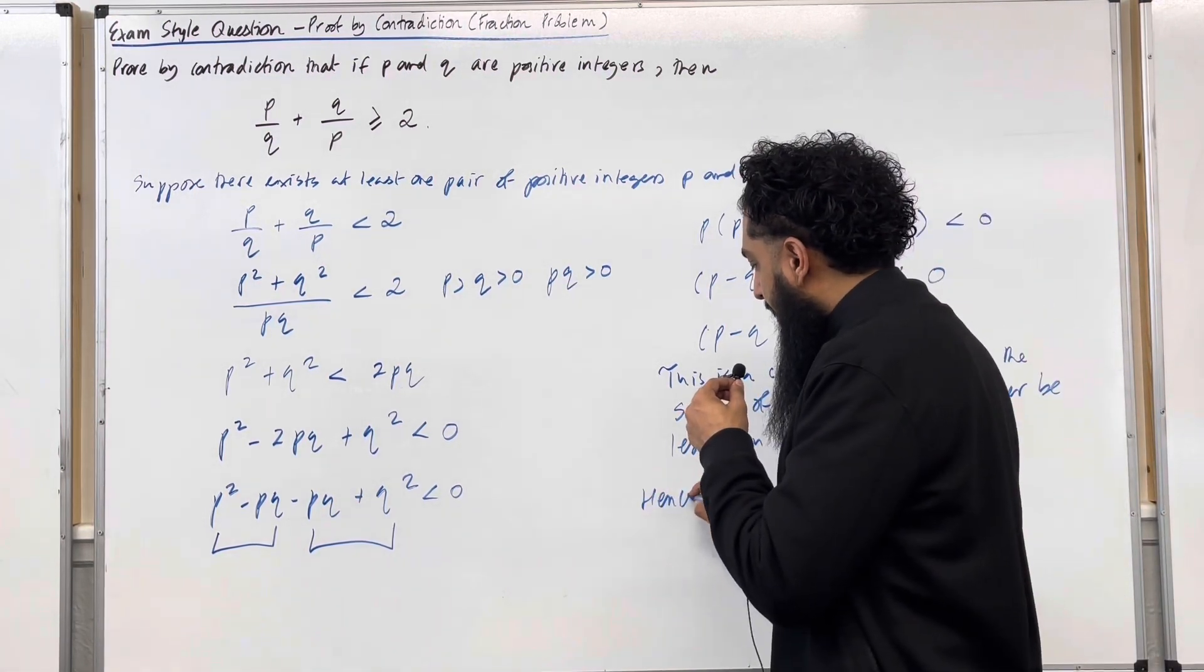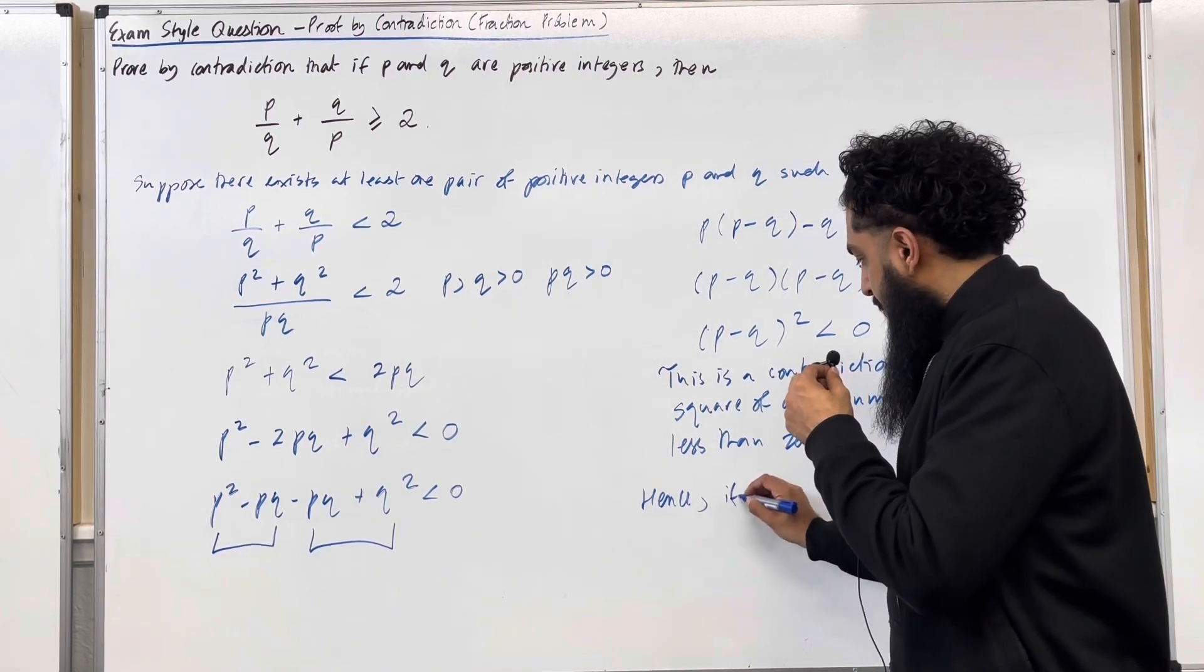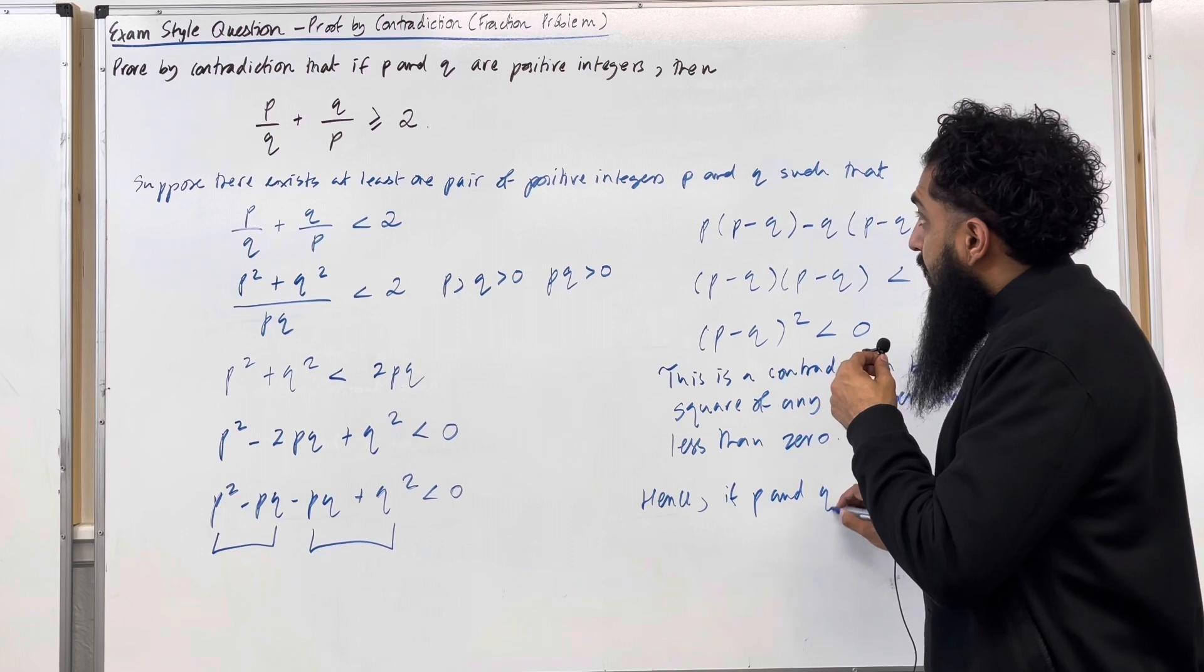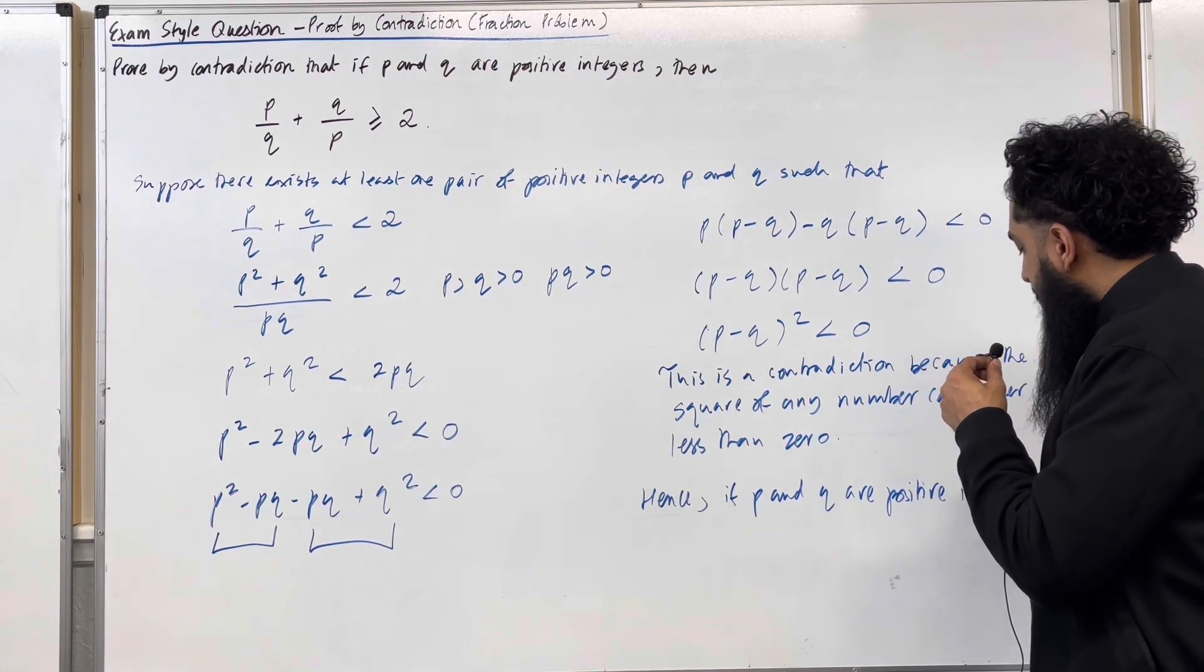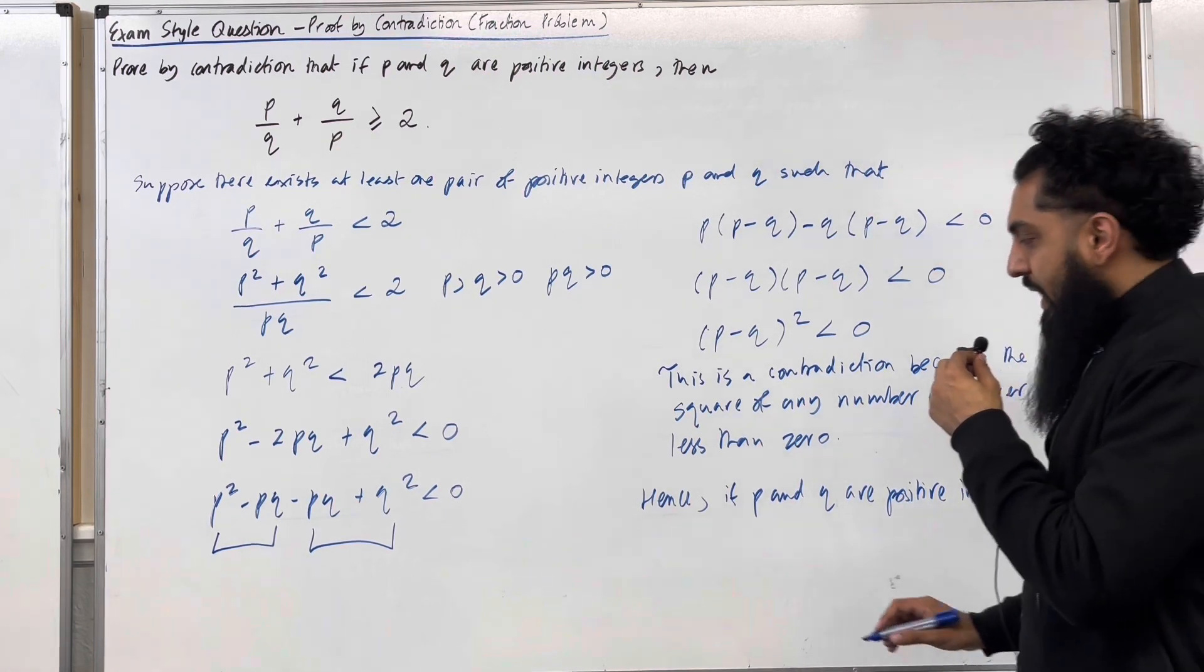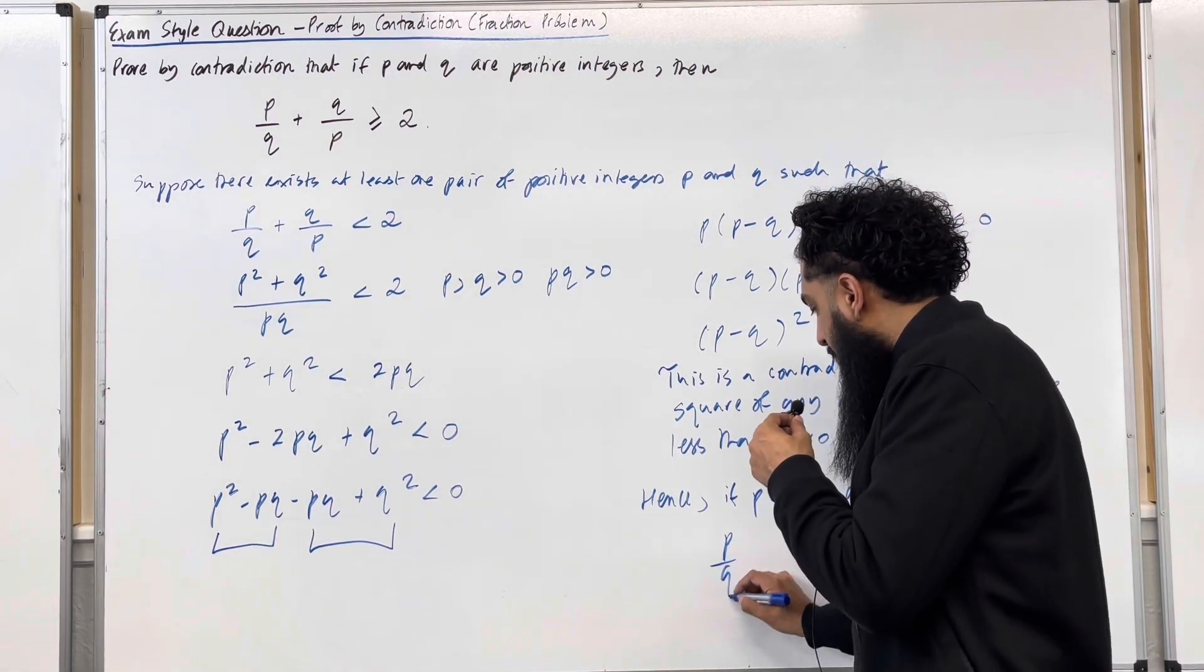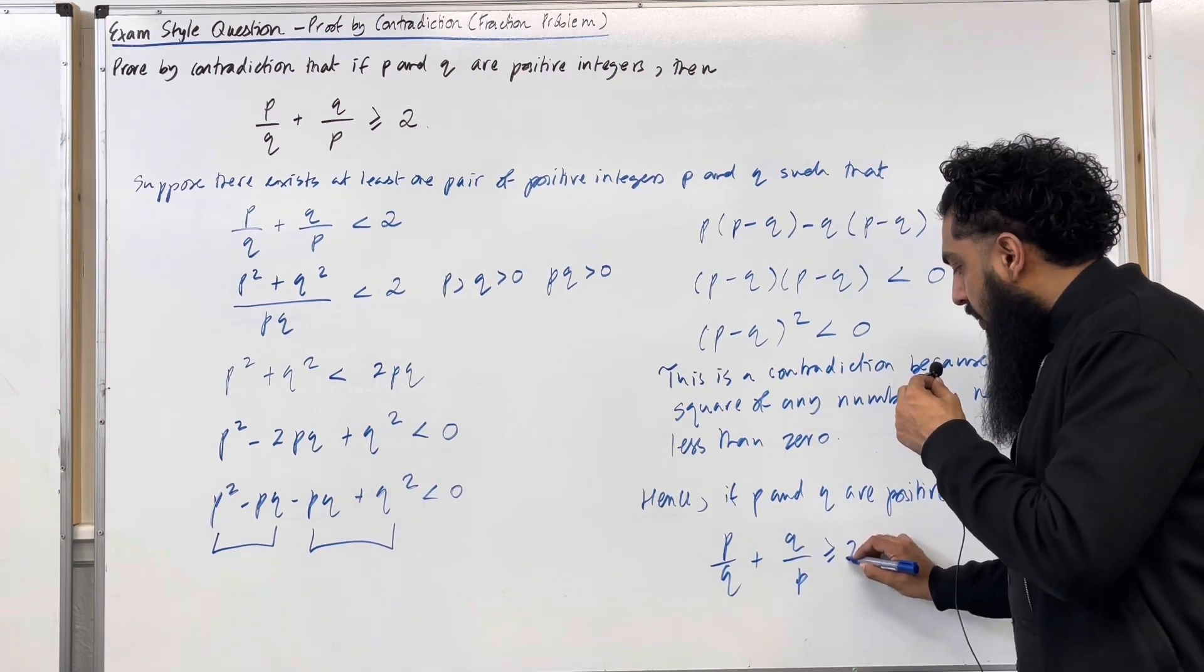Hence, now we have to write a conclusion. If p and q are positive integers, then we must have that p over q plus q over p has to be greater than or equal to 2.